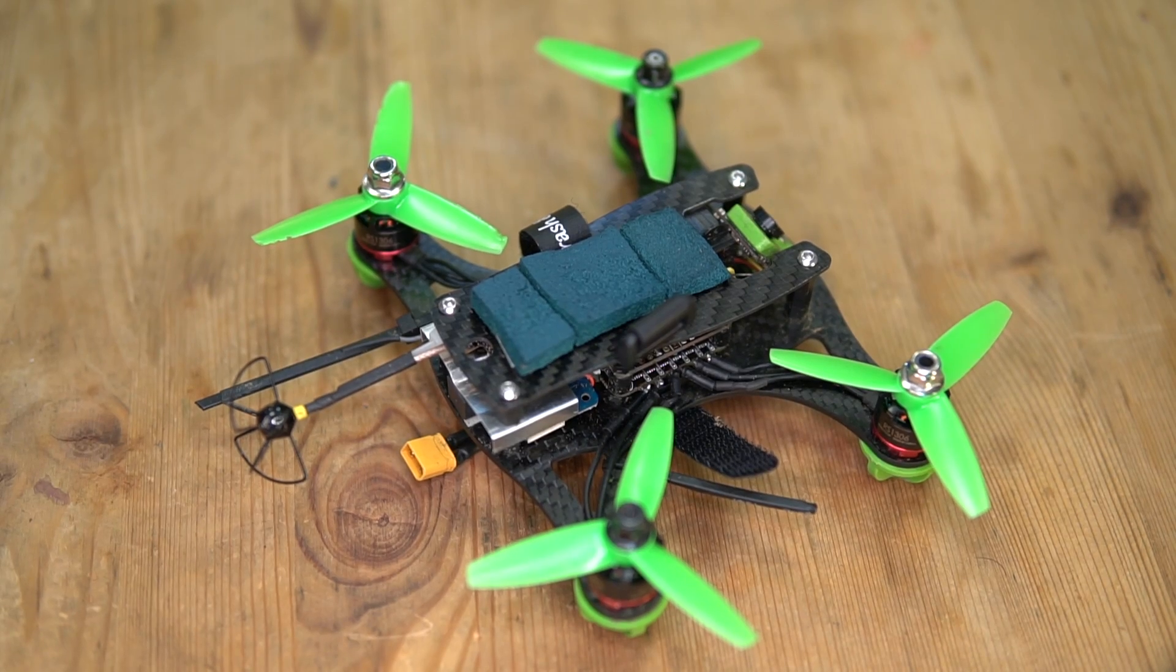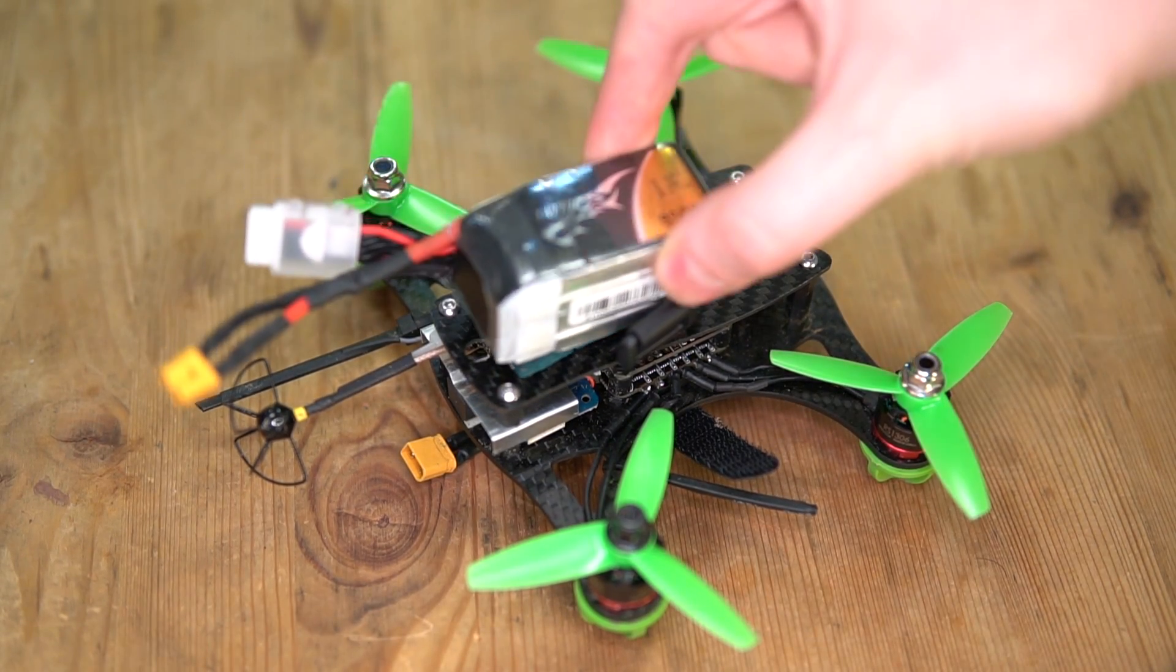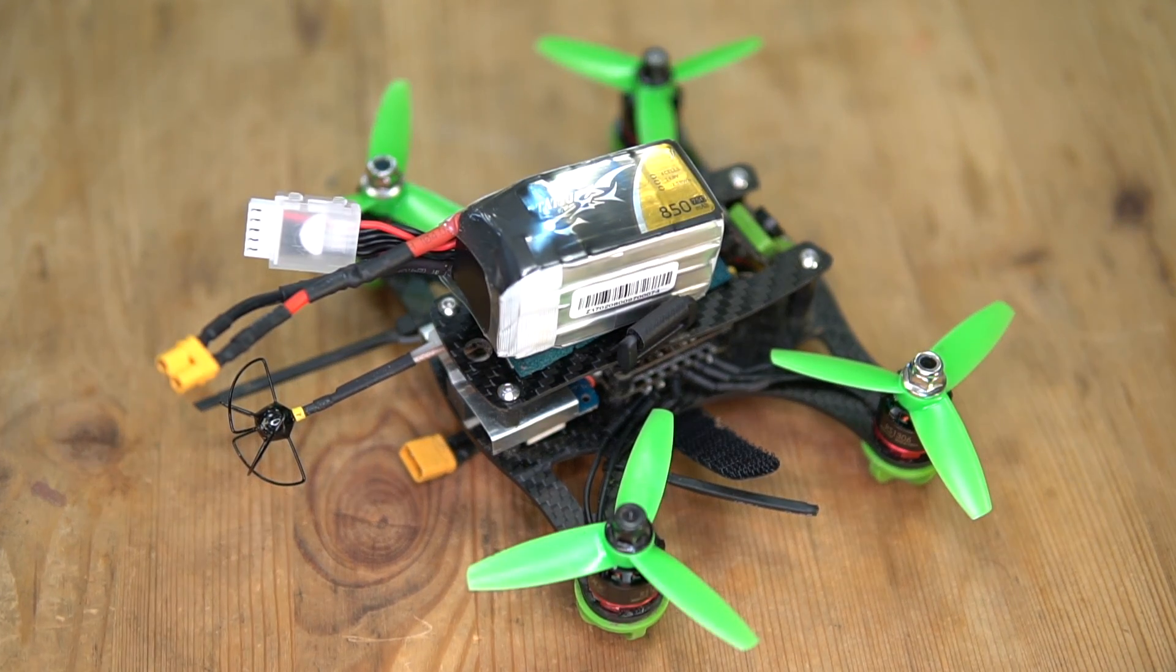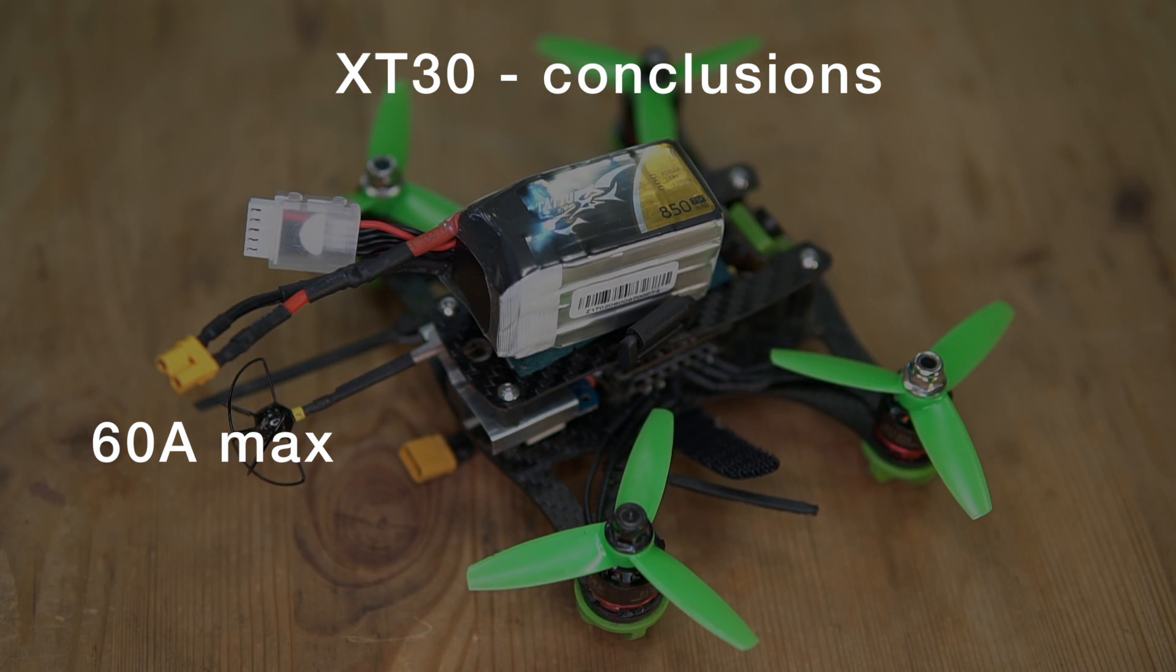With all that being said, I would recommend using the XT30 with 16-gauge wire on drones that take up to 60 amps when in full punch. That's going to be all the smaller drones with up to 3-inch propellers, or up to 1306 motors.